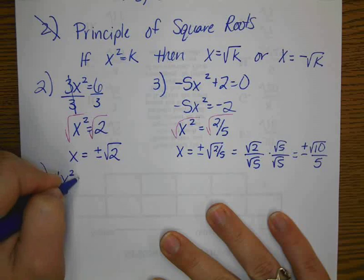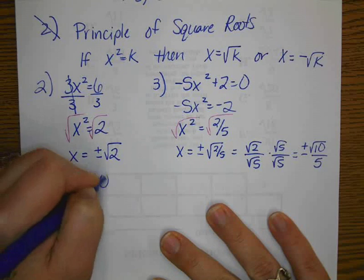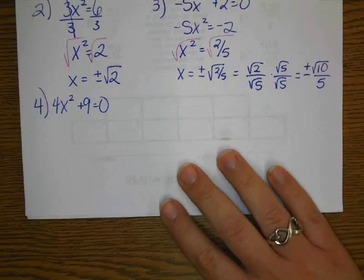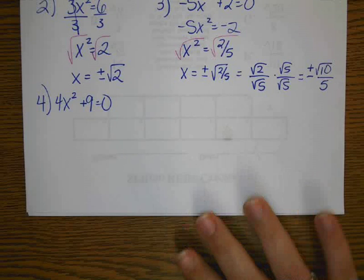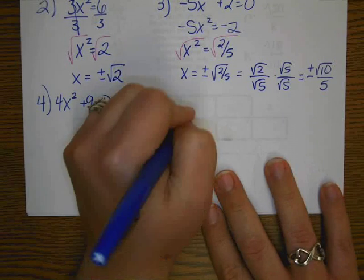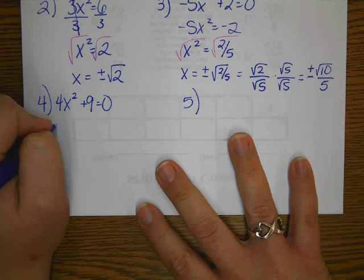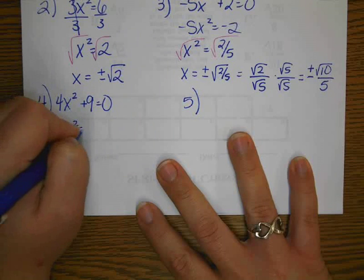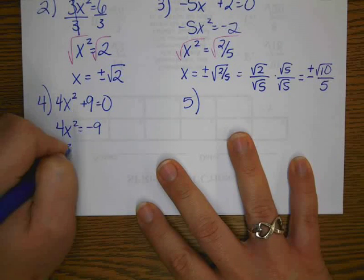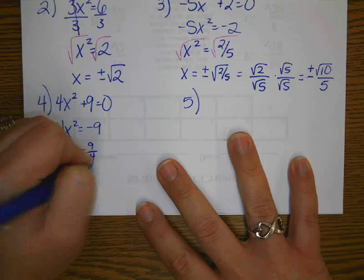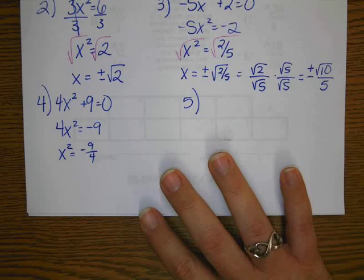4x squared plus 9 equals 0. Again, pause it. Take a moment to give this problem a try. We get 4x squared equals negative 9. x squared equals negative 9 fourths. Everyone should have gotten there perfectly fine.